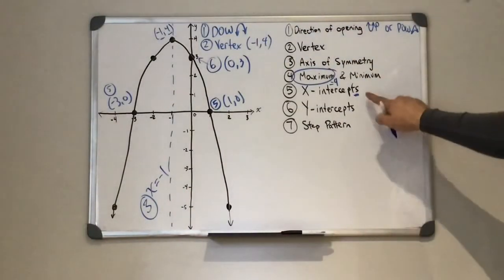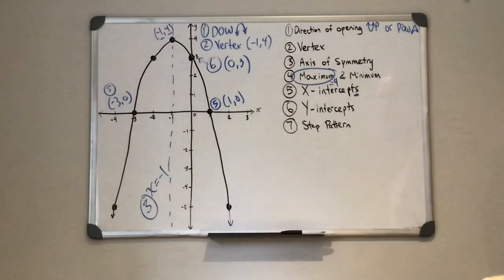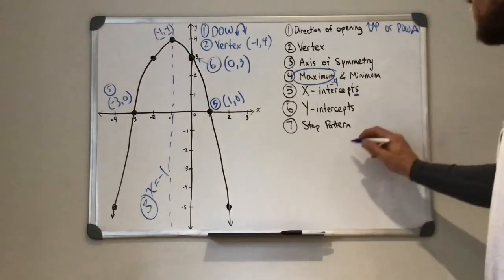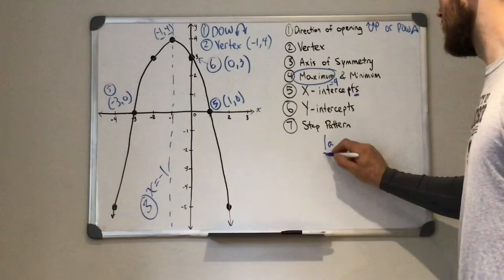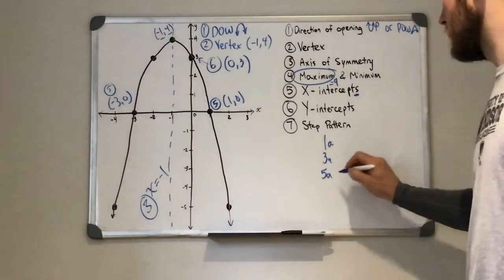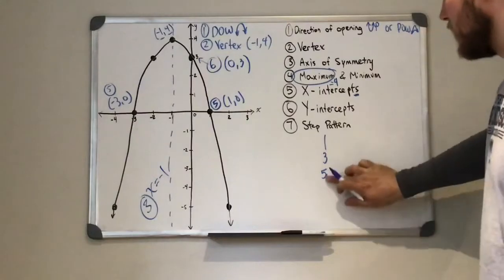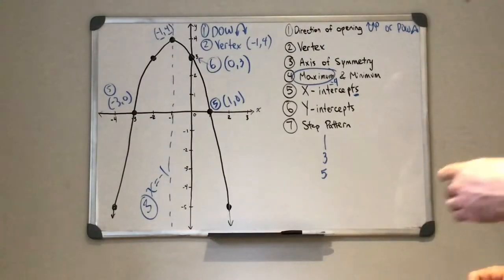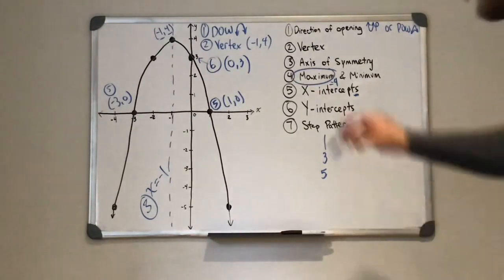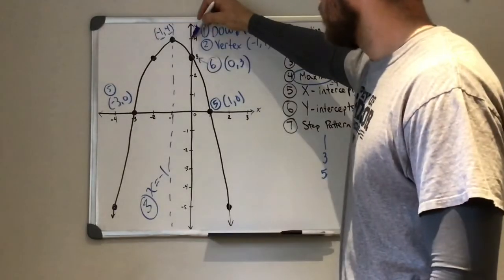So we've got our x and y-intercepts and the step pattern. In this case it's always going to be 1a, 3a, 5a. Don't really worry about the a's just yet because we're going to deal with that along the way. But you can see as we go right 1, we went down 1.